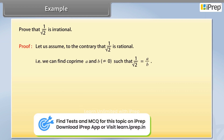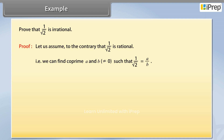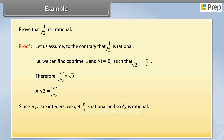That is, we can find co-prime integers a and b, where b is not equal to 0, such that 1 upon square root 2 is equal to a upon b. Therefore b upon a is equal to square root 2, or square root 2 is equal to b upon a.